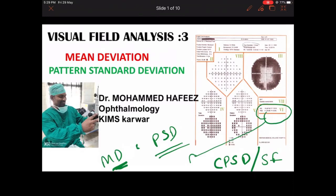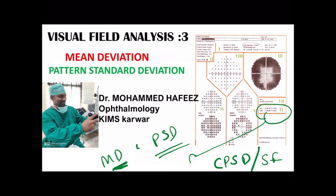Hi everyone, it is Dr. Mohammed Abhis. Today we'll discuss the mean deviation, pattern standard deviation, and corrected pattern standard deviation — that is zone 6 of the Humphrey single printer chart. Let's start the class.